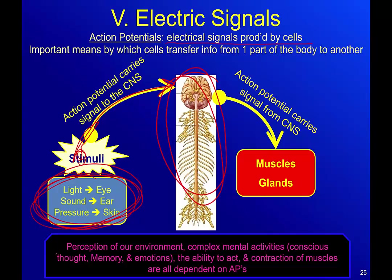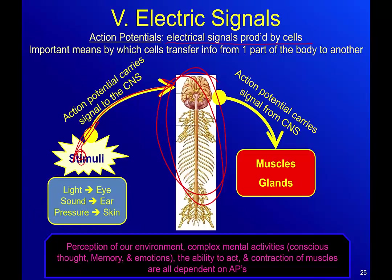The central nervous system perceives the environment. We've got complex mental activities like conscious thought, memory, emotions, and the ability to act. With the contraction of muscles we move — for example, because something is touching us and we don't want it touching us. It is all dependent on those action potentials. Action potentials do all of that, and once I decide I need to send another action potential out to my muscles, say if I stepped on a tack.